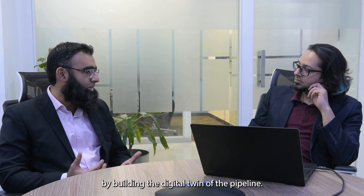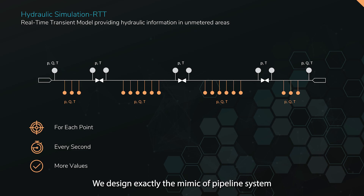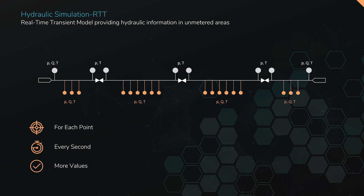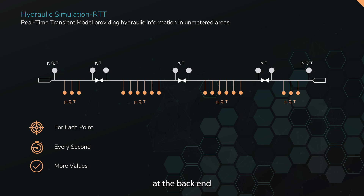How exactly does software-based leak detection work? We start configuration by building the digital twin of the pipeline. We define the mimic of the pipeline in the system by specifying characteristics such as diameter, length, elevation profile, roughness, and thickness. All these parameters are configured inside the software to create the digital twin. Once the twin is ready, the software starts the simulation and performs calculations in the backend based on the laws of conservation of mass, energy, and momentum.